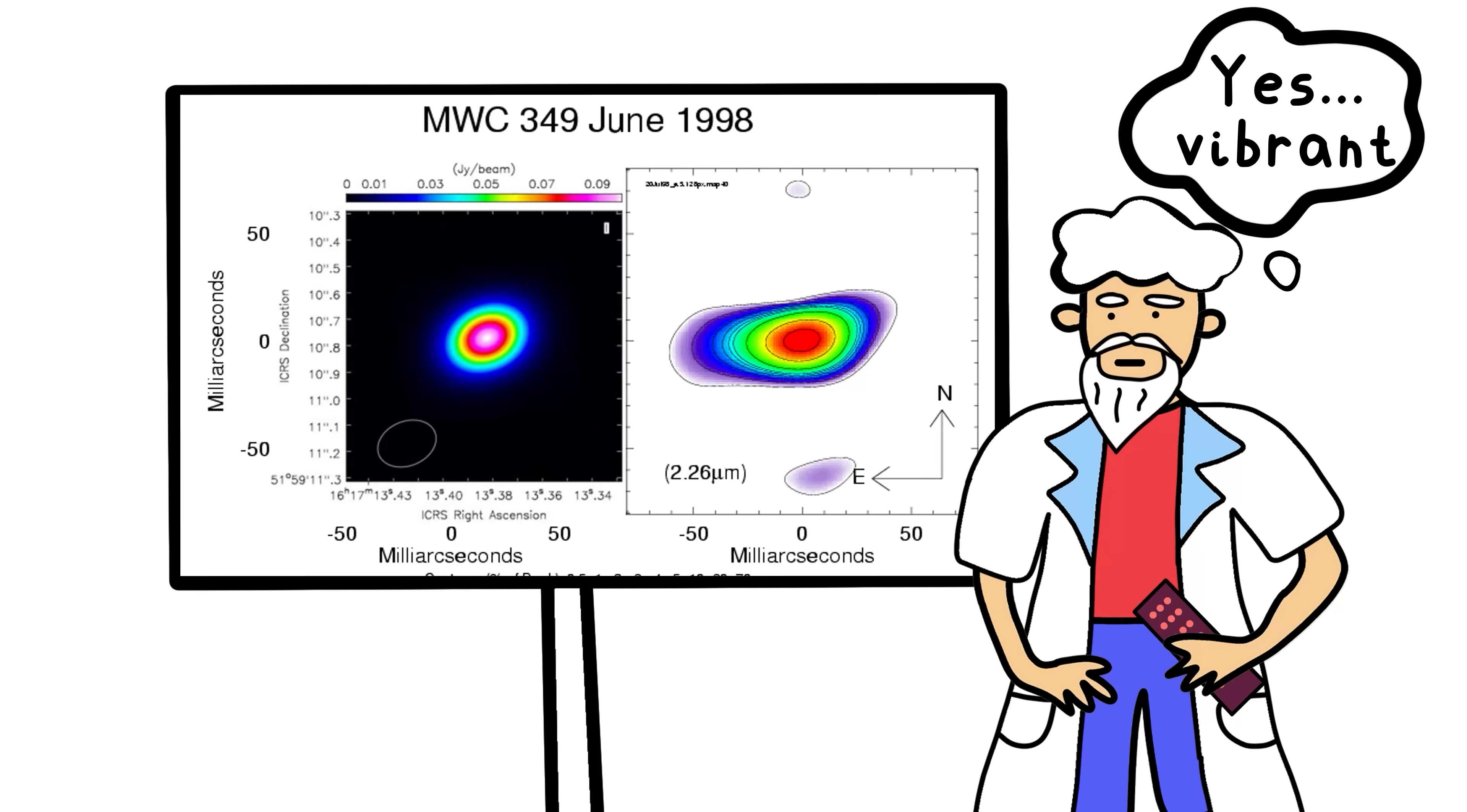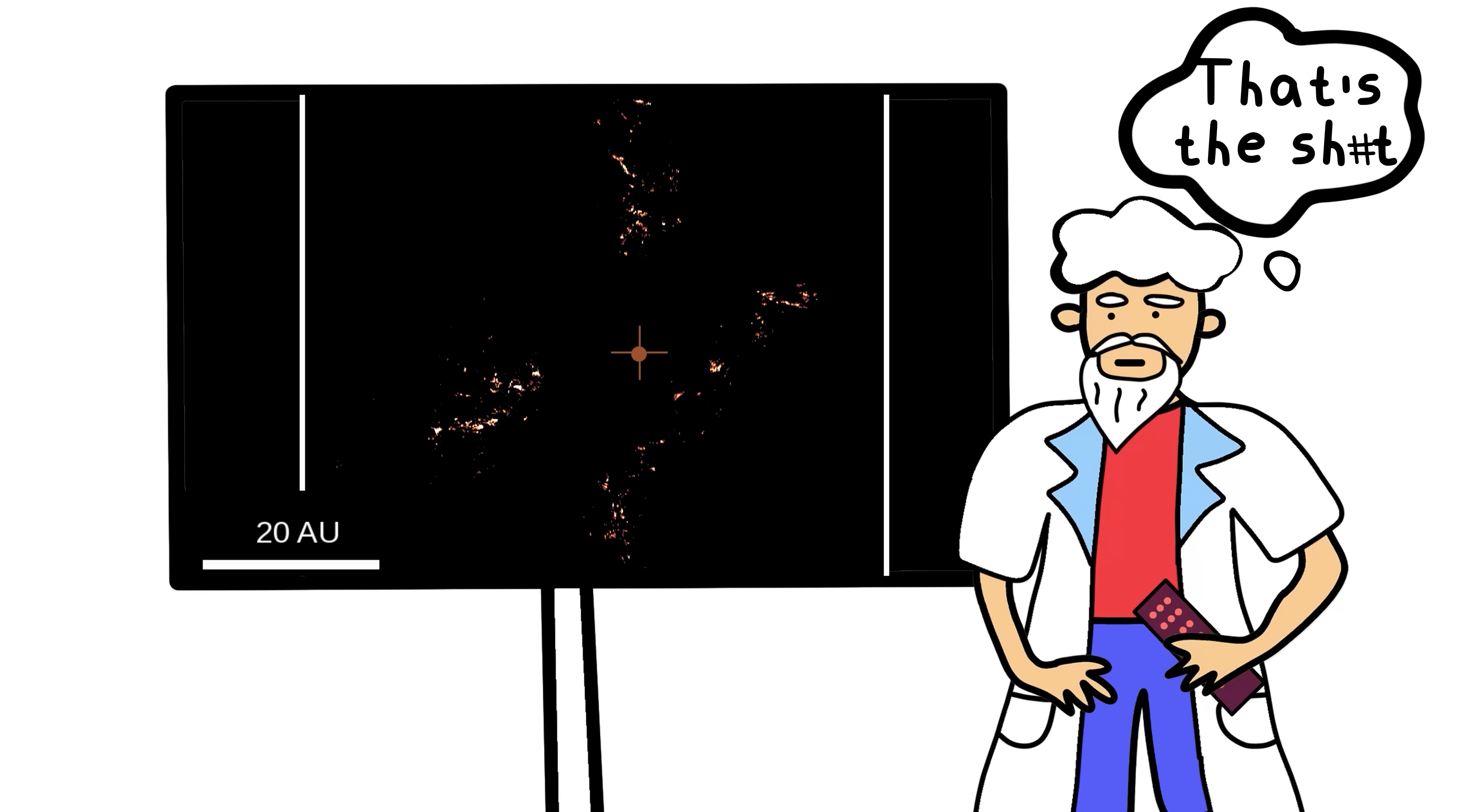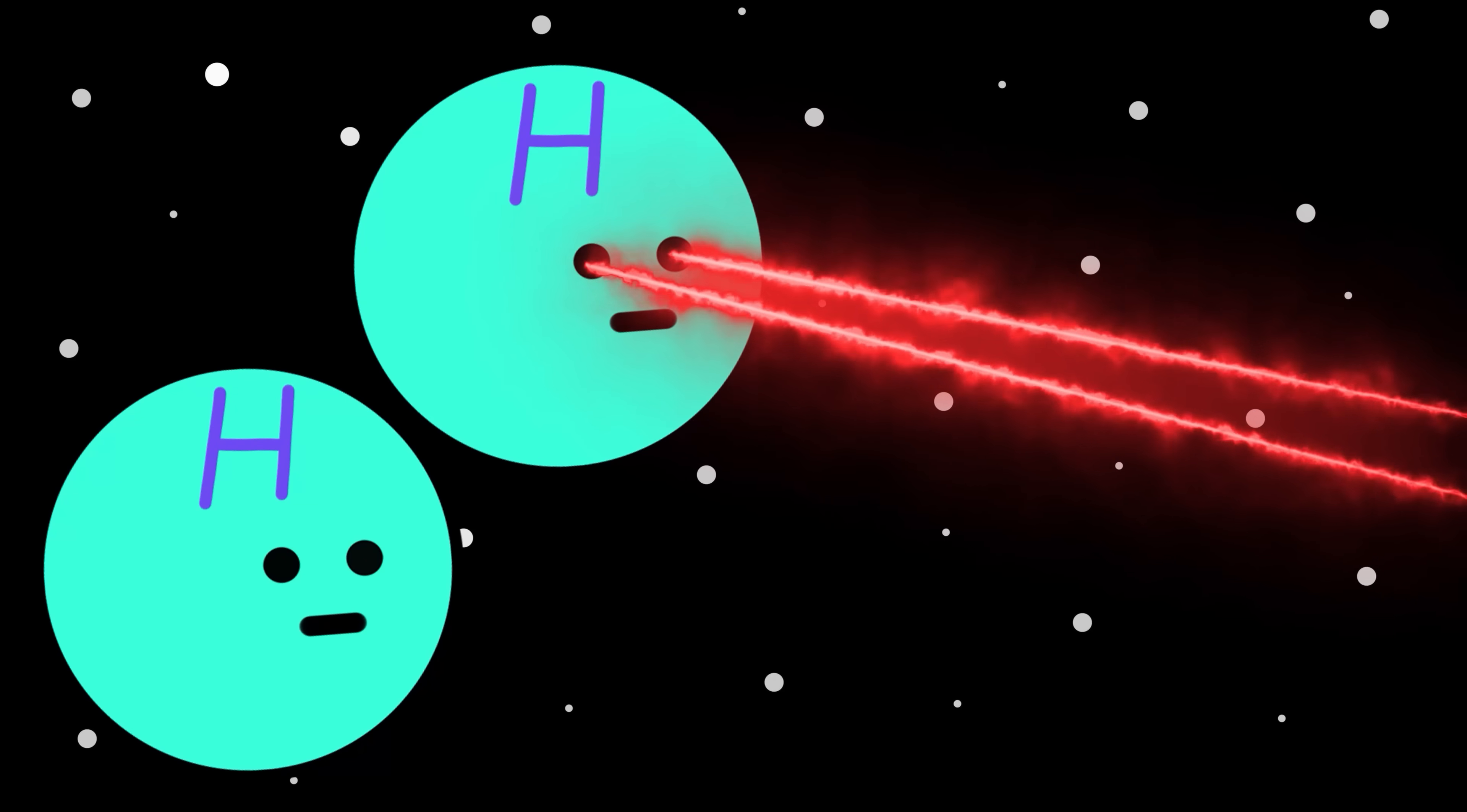You flip to infrared, suddenly you see that gigantic accretion disc all around it. You go to microwaves and, wait, is it shooting lasers? Yeah, actual space lasers, made of hydrogen. But there's more.